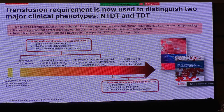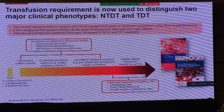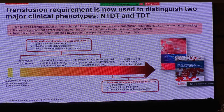However, there is a spectrum of transfusion requirement. Sometimes they require transfusion for an infection, pregnancy, or growth — intermittent blood transfusion — and sometimes they require regular blood transfusion, especially as some patients are getting older and requiring more blood transfusion. So if we look at this spectrum, it is the need for blood transfusion that we need to understand better in order to understand the morbidities of our patients.